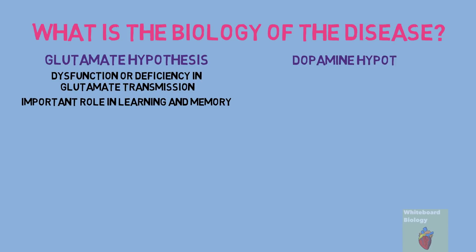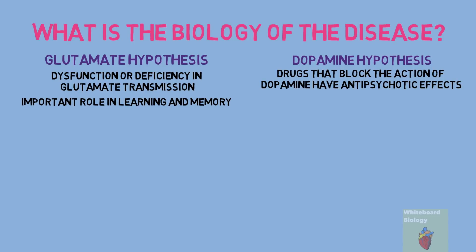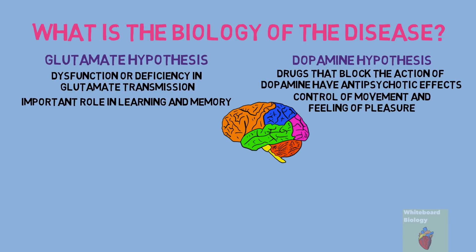The second theory is the dopamine hypothesis. The clearest evidence for this is that drugs which block the action of dopamine have antipsychotic effects. Dopamine has many roles in the brain and is important in the control of movement and the feeling of pleasure. Increased dopamine activity in certain areas of the brain and decreased dopamine activity in other areas have been seen to lead to the symptoms of schizophrenia.